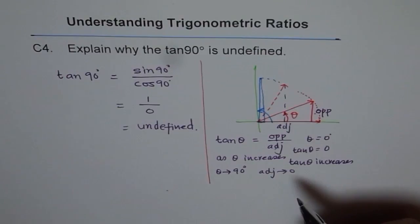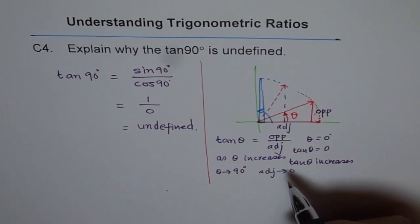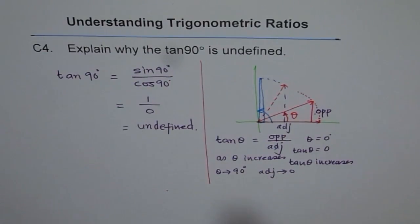At 90 degrees, as theta approaches 90 degrees, the adjacent side approaches 0, and dividing by 0 leads to an undefined number. We sometimes say infinity — a very, very large number which we really have no idea about. Since we can't give it a value, we say it is undefined. Therefore, tan of 90 degrees is undefined.